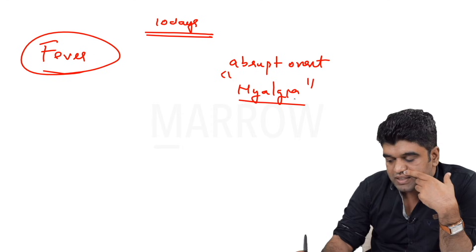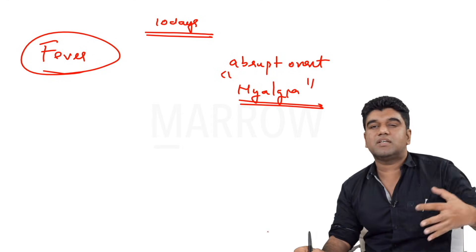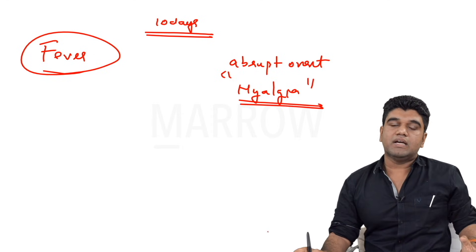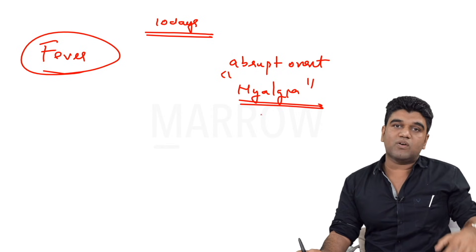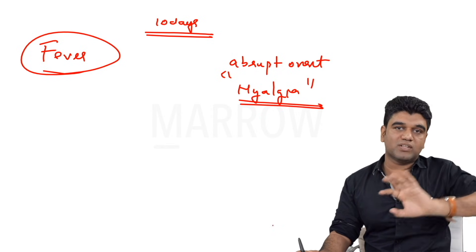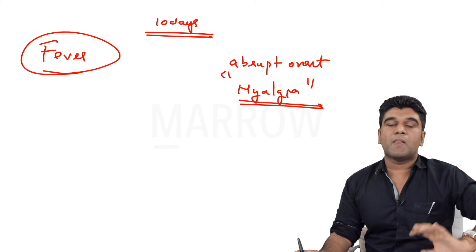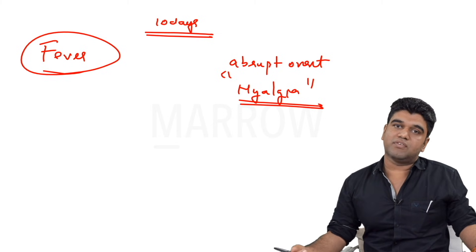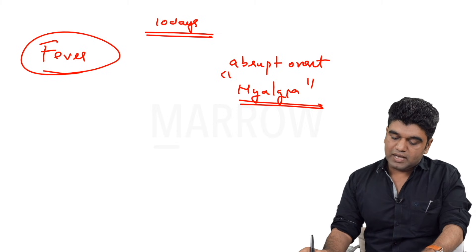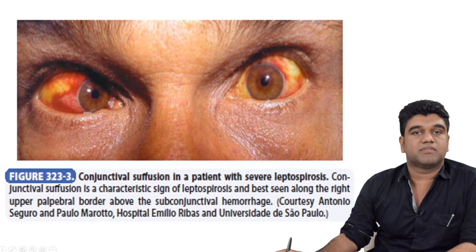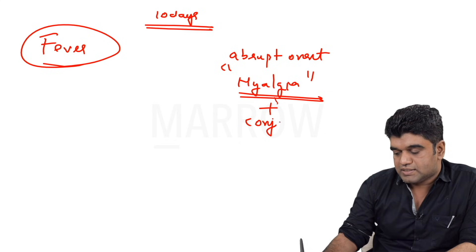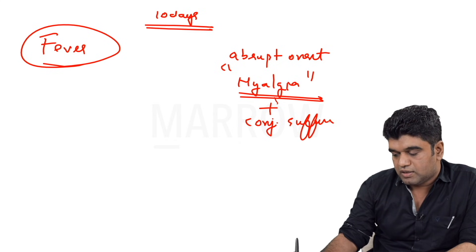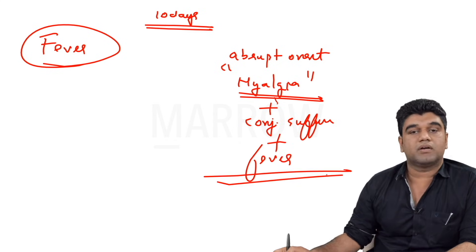It is always myalgia that the patient experiences, a myalgia that is disproportional to the fever, as if your muscles are breaking down. Although we call dengue break bone fever, this is more appropriate to call muscle breaking down kind of fever. Severe myalgia and majority of patients have conjunctival suffusion. We tend to think of myalgia plus conjunctival suffusion plus fever as the most important part.